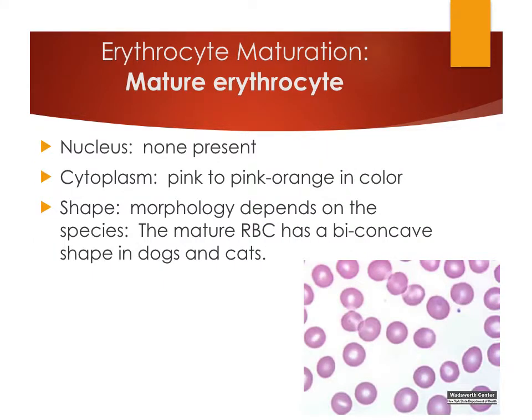Finally, the mature erythrocyte has no nucleus, a pink or orange cytoplasm, about one-third of the cell represented by central pallor, and a biconcave disc shape — especially important in dogs and cats when evaluating morphology.